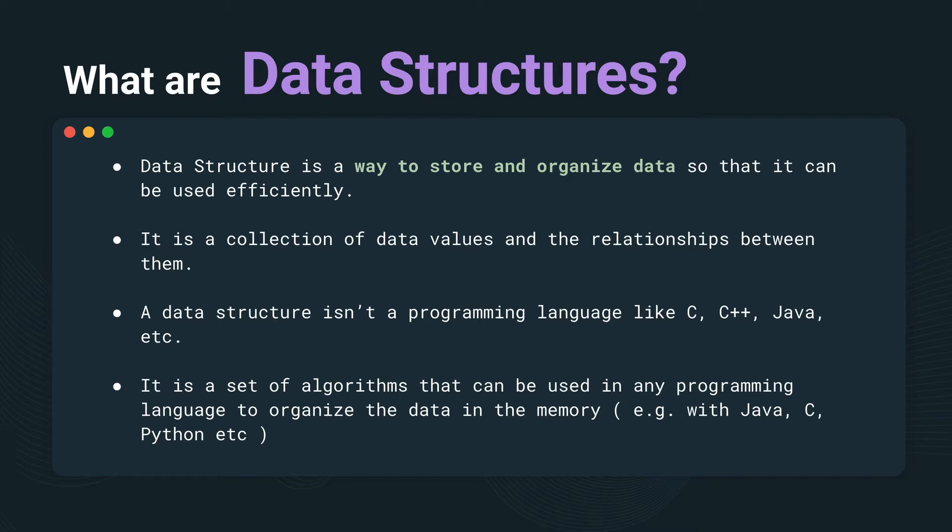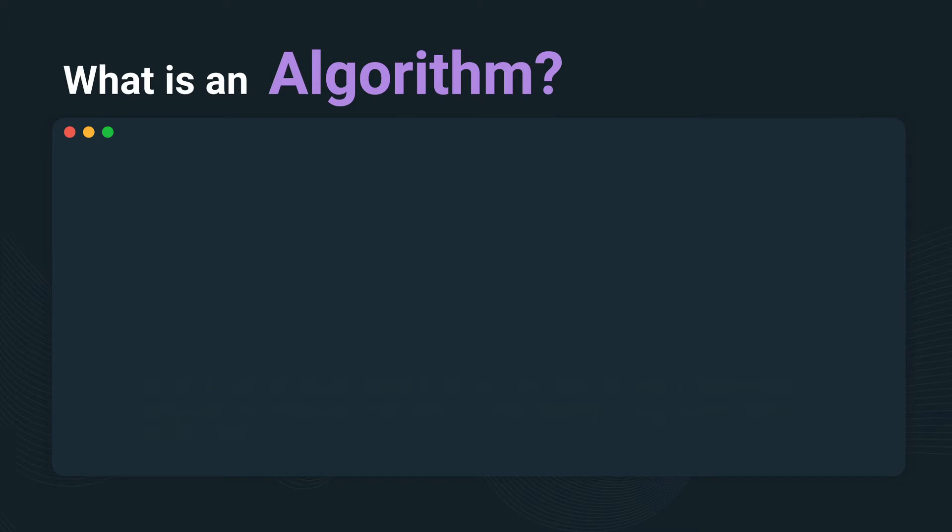Data structures can be used in any programming language to organize data in memory. You can use it with Java, with C programming, or with Python. In this tutorial, we are going to talk about using it with C programming. So now we understand what data structures are — they are a way to store and organize data.